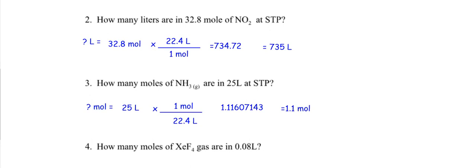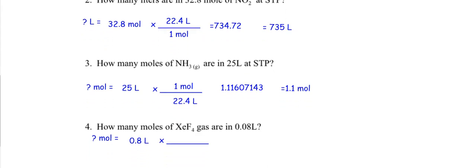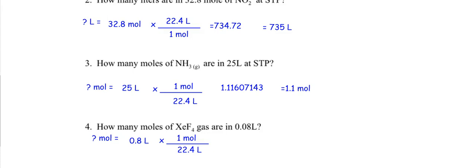Pause this and do number four entirely on your own. Question mark moles equals 0.8 liters. Liters go on the bottom with 22.4, one mole goes on top. Divide to get a small number. I need one sig fig — do I round up that three? Yes — final answer: 0.036 moles.